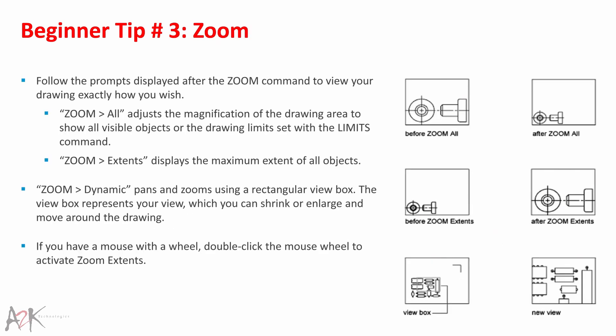Beginner Tip 3 – Zoom. Follow the prompts displayed after the Zoom command to view your drawings exactly how you wish. Zoom All adjusts the magnification to show all visible objects or the drawing limits set with the Limits command. Zoom Extents displays the maximum extent of all objects. Zoom Dynamic pans and zooms using a viewbox that represents your view, which you can shrink, enlarge, or move around the drawing to pan or zoom to fill the viewport. This isn't available in perspective projection.